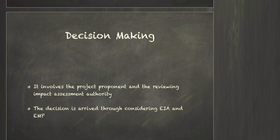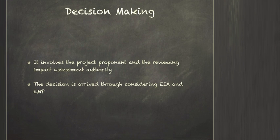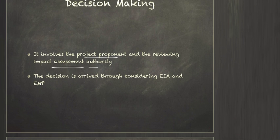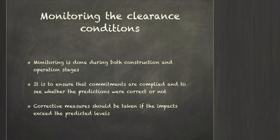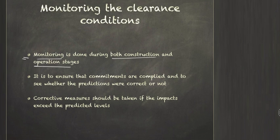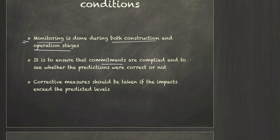After all this is done, we go for decision making. The decision is made by the impact assessment authority, and the project proponent is the person who wants the project to happen. Considering the EIA report and the environment management plans, this authority takes the decision. Even after clearance has been provided, monitoring should be done during both the construction and operation stages to ensure commitments made during planning are complied with, and corrective measures taken if predictions are incorrect.